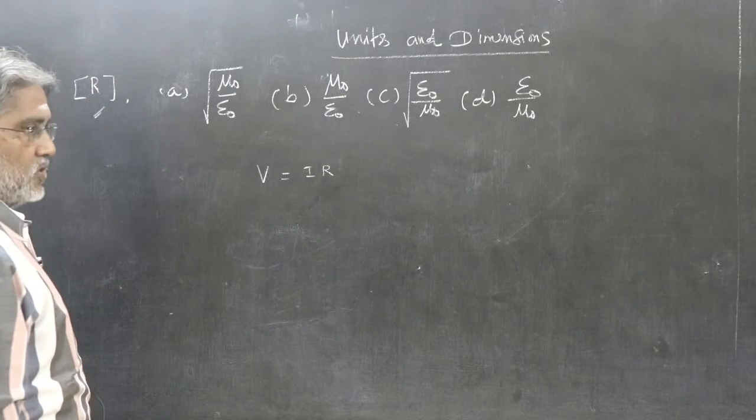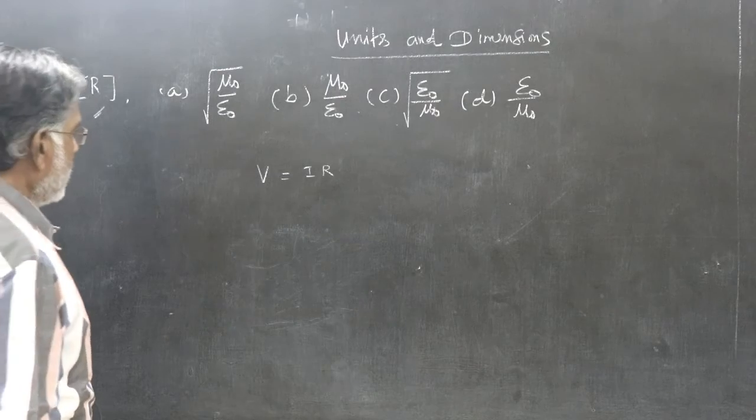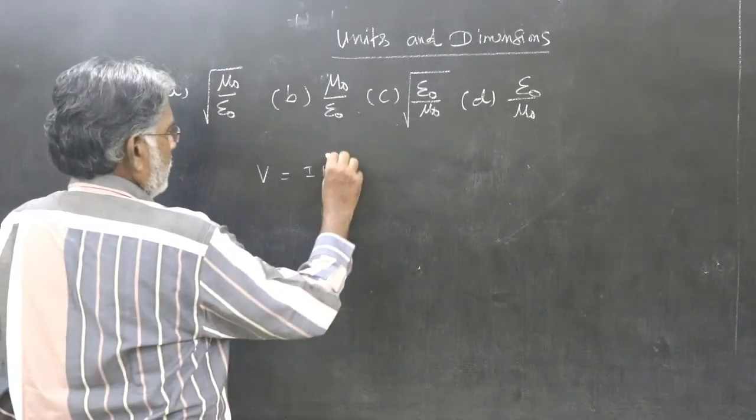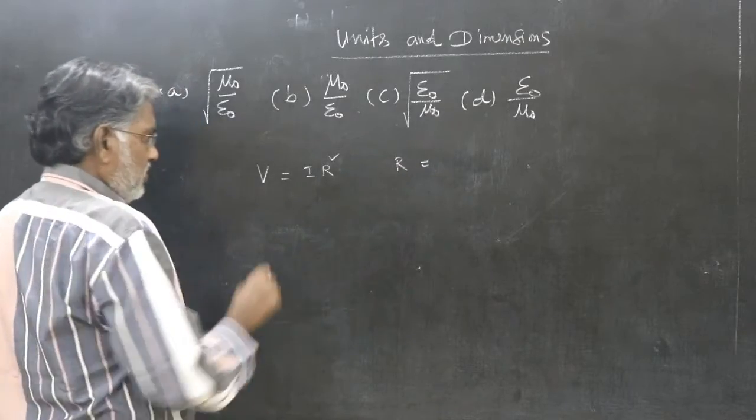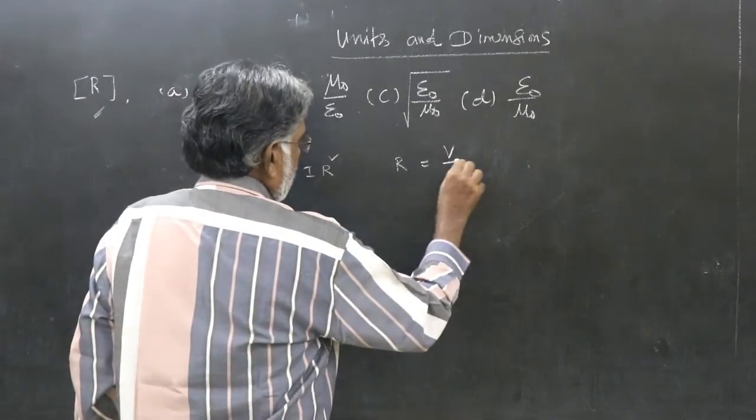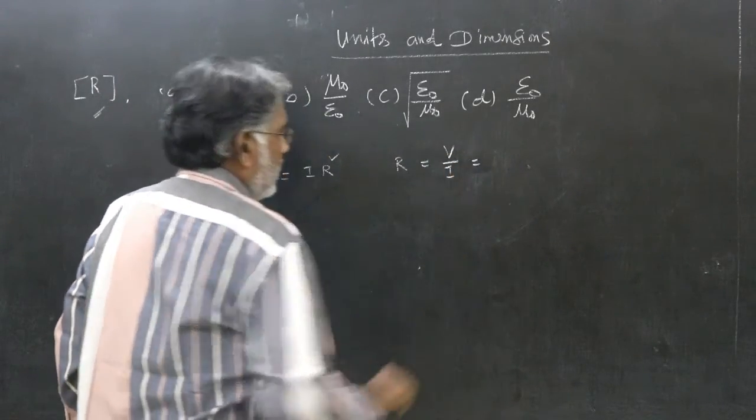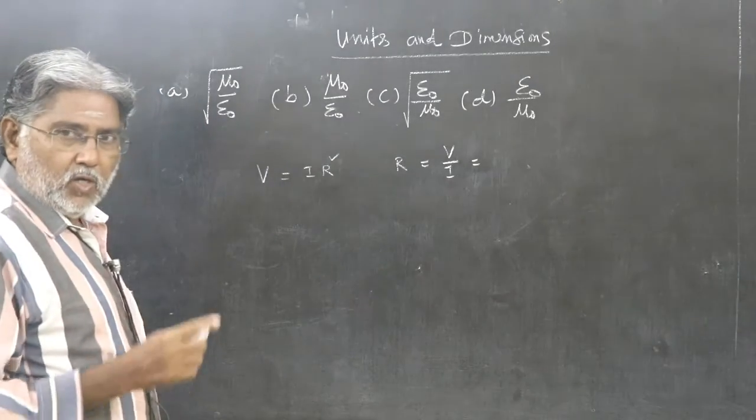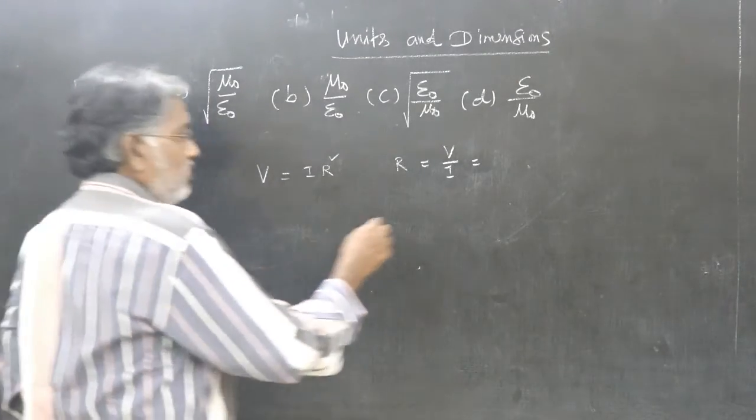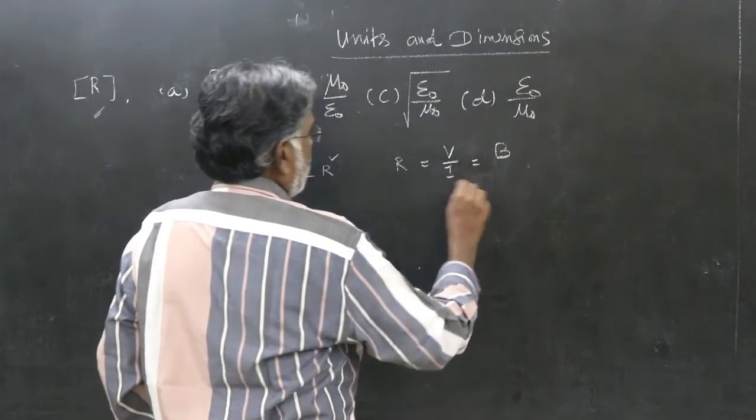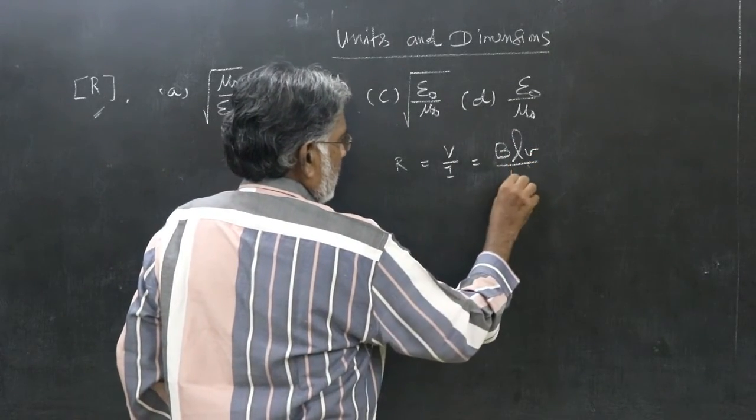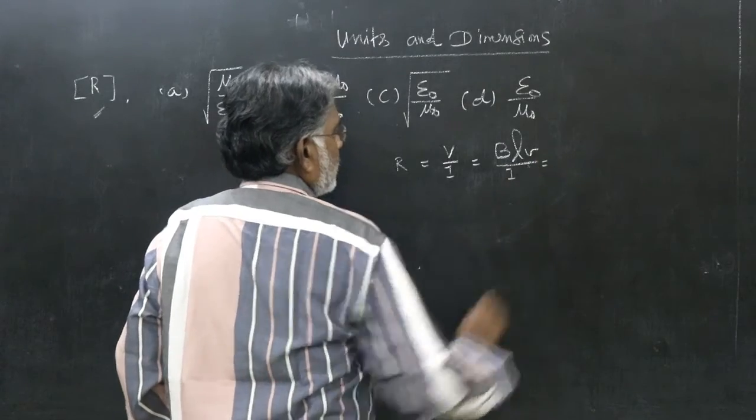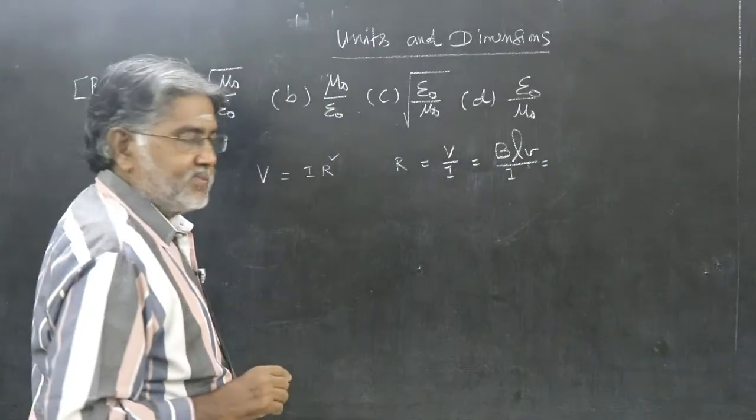R is resistance. You want to find the dimension of resistance. So just keep it as resistance itself, V by I. What is V? Voltage. Do you know induced EMF is BLV? See, gradually I am bringing B here. I, you write as it is.